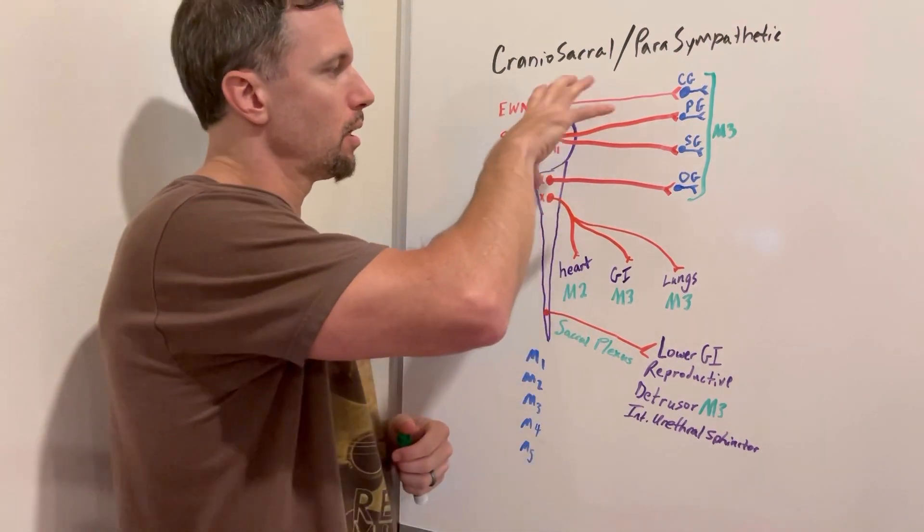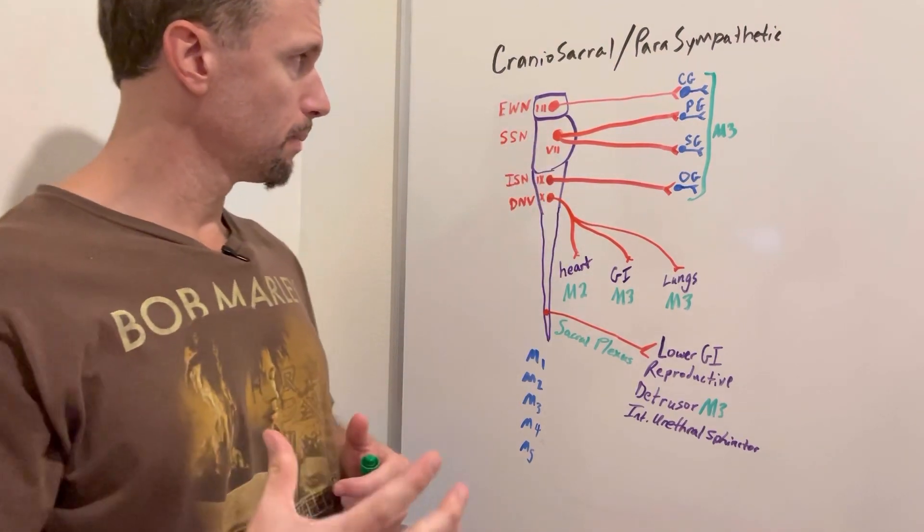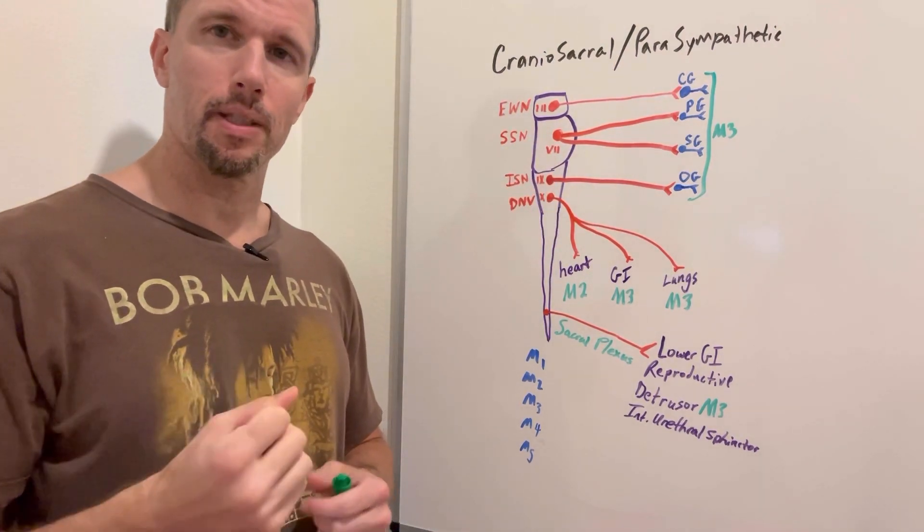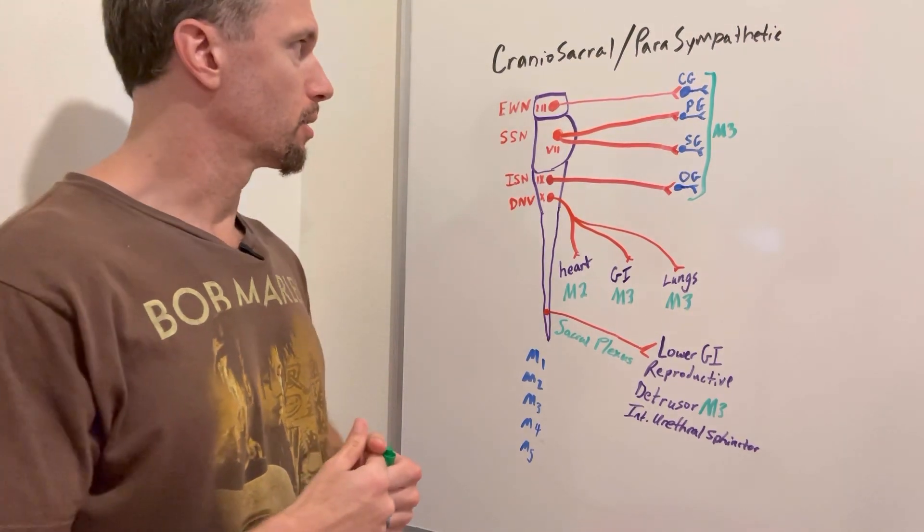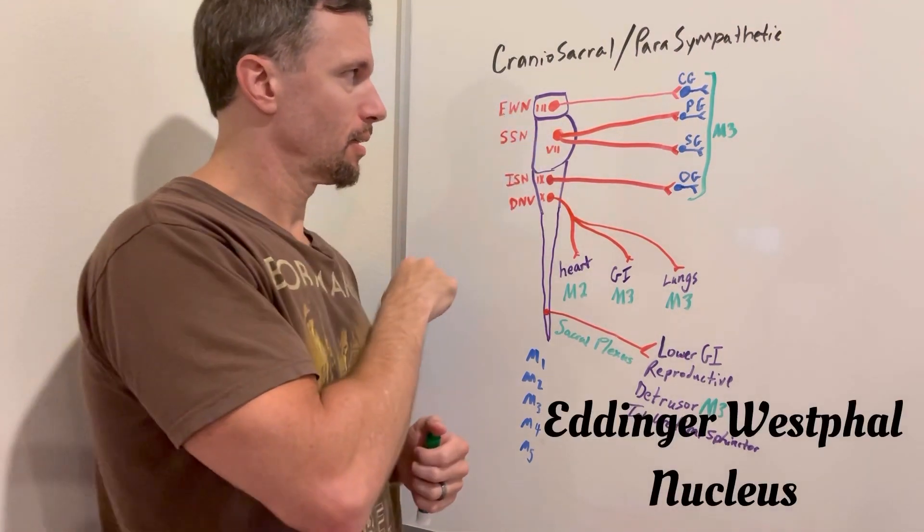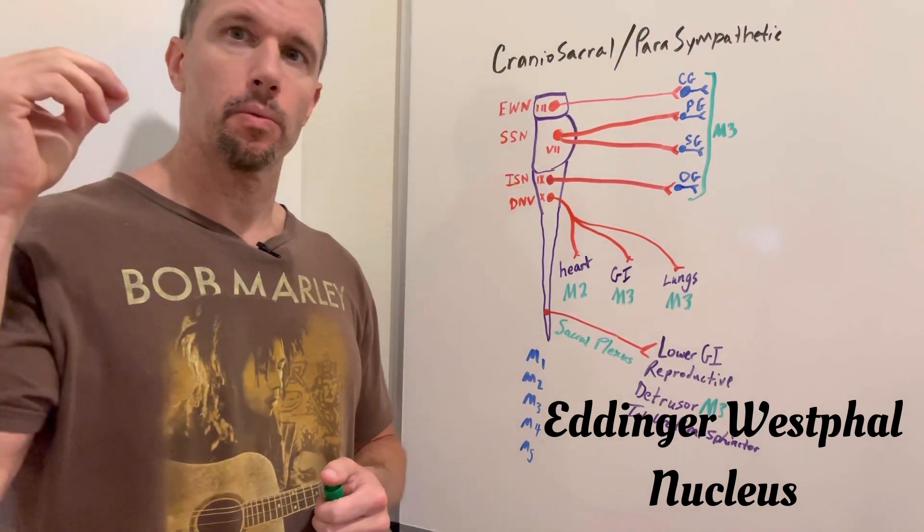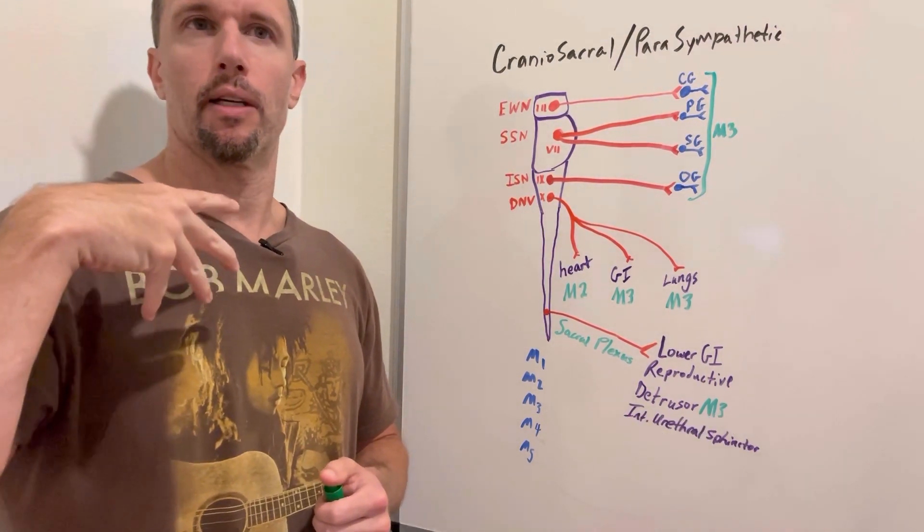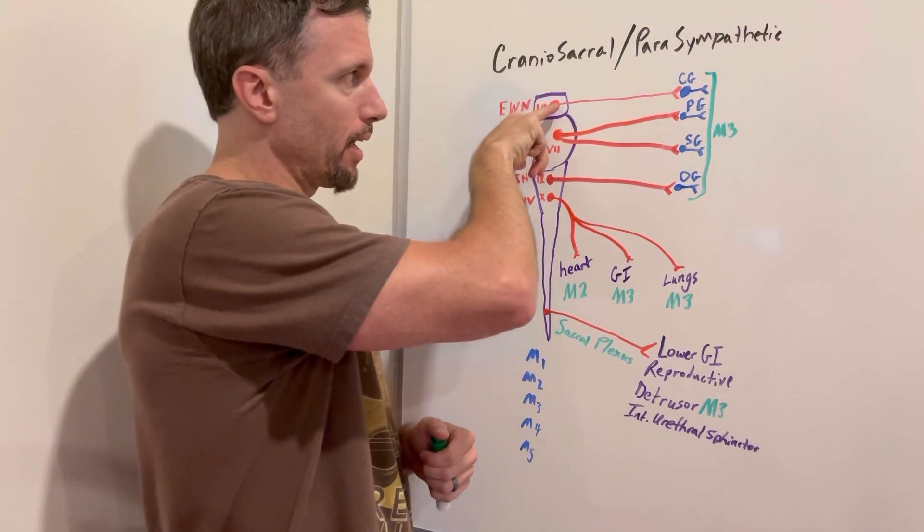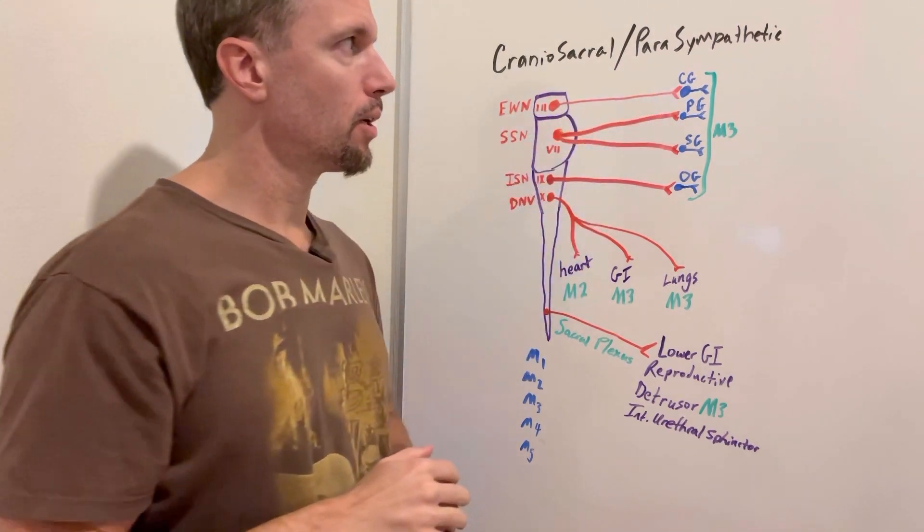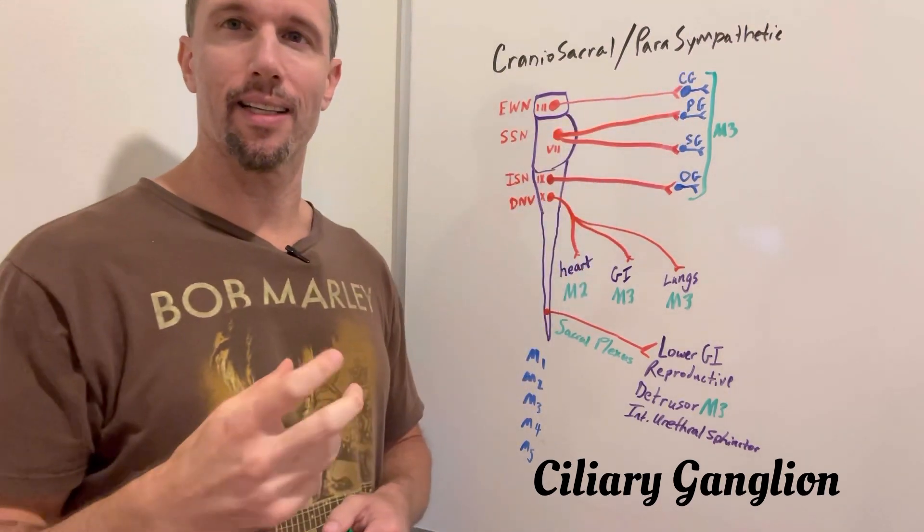In the midbrain, the nucleus that contains the preganglionic nerve fibers is called the Edinger-Westphal nucleus. When it gets stimulated, say you get a light shined in your eyes, it will stimulate the Edinger-Westphal nucleus and send preganglionic nerve fibers down to the ciliary ganglion.